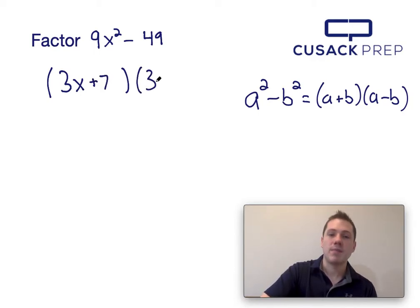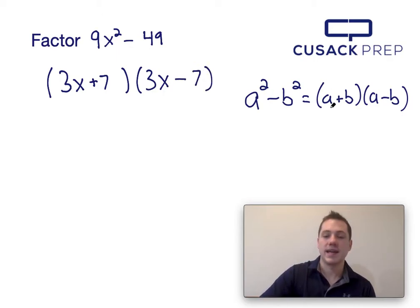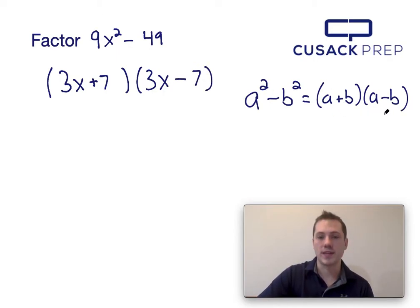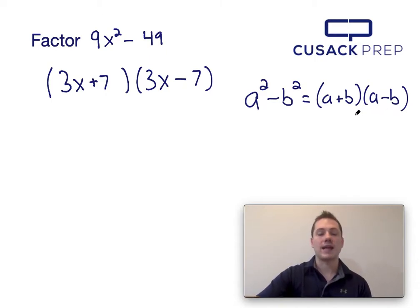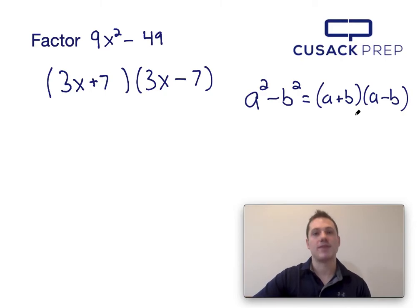So by plugging in 3x for a and 7 for b into the right hand side of the equation, I can see that 9x squared minus 49 factors to 3x plus 7 times 3x plus 7 via the difference of squares.